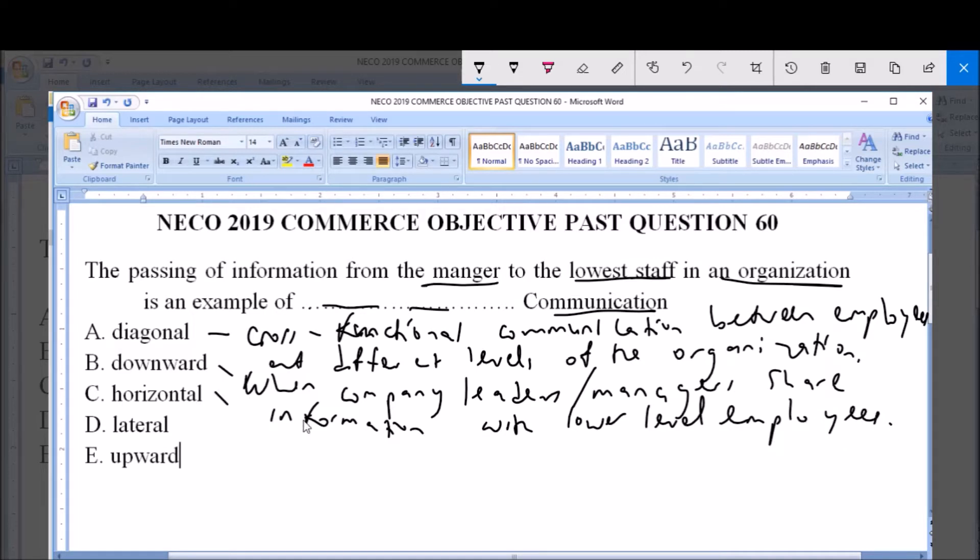Option C, which is horizontal, involves the exchange of information across departments at the same level of an organization.